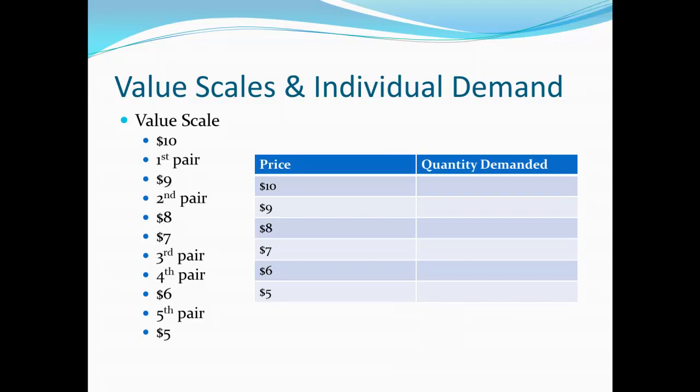Demand really just tells us how much of a good we're willing to buy at various prices, but the value scale tells us the choices we make — remembering that we always trade up. So in this case, if the price is $10, I'm being asked: am I willing to give up $10 to get a pair of socks? Well, according to my value scale, $10 is more valuable to me than even the first pair of socks. As a result, I'm not going to buy any at all. On the other hand, if the price is $9, the first pair of socks is more important to me than $9, so I am willing to buy that first pair. So at a price of $10, my quantity demanded is zero, while at $9, I'm willing to buy that first pair. Now, a way to think of this is that the price is really kind of a hurdle that pairs of socks have to jump over for me to be willing to buy them. If the price is $10, the hurdle is so high that no pair of socks manages to jump over it in terms of its value.